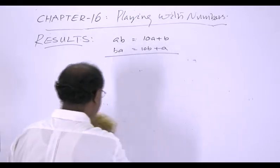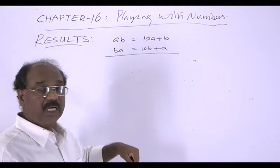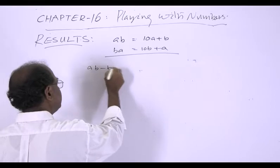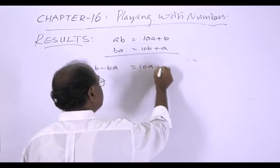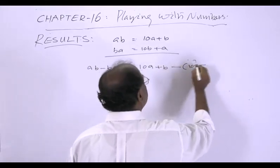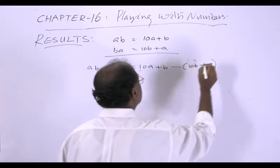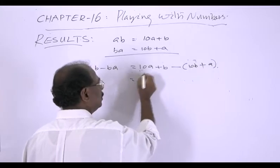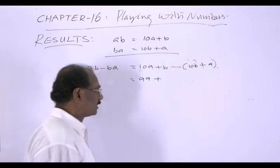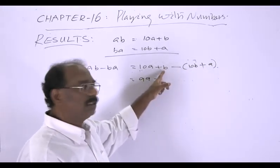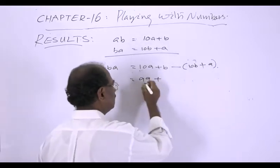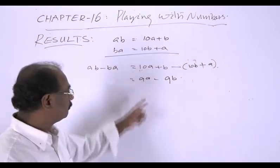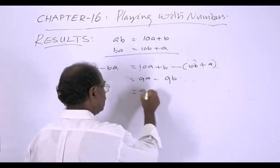Again, consider the two-digit numbers AB and BA. Suppose we subtract one from the other — subtract BA from AB. So AB minus BA equals 10A plus B minus 10B minus A, which equals 9A minus 9B, or 9 into A minus B.